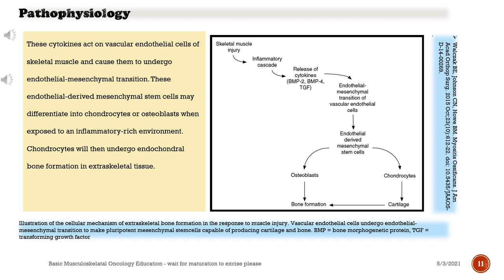Illustration of the cellular mechanism of extraskeletal bone formation in response to muscle injury: vascular endothelial cells undergo endothelial mesenchymal transition to make pluripotent mesenchymal stem cells capable of producing cartilage and bone. BMP equals bone morphogenetic protein; TGF equals transforming growth factor.